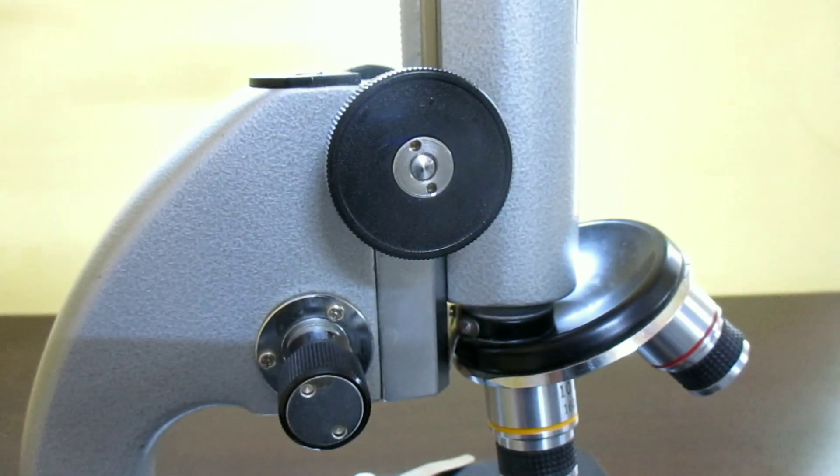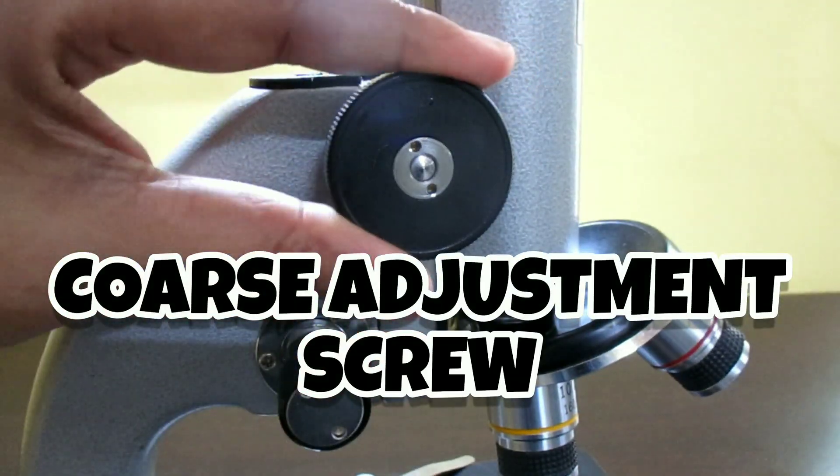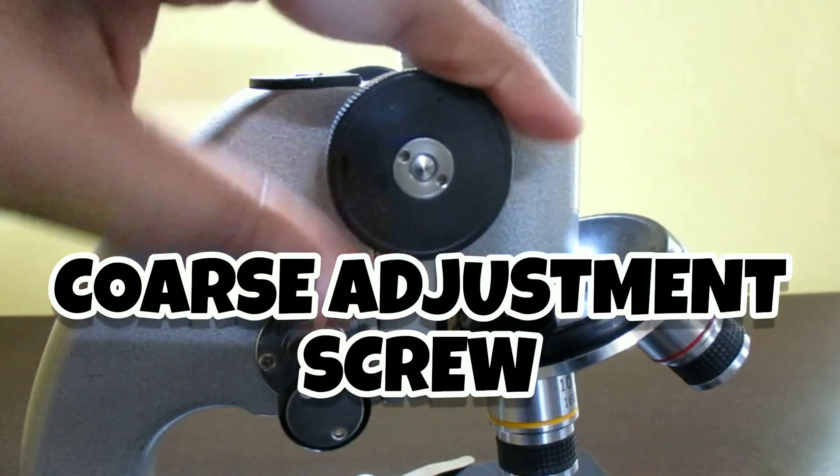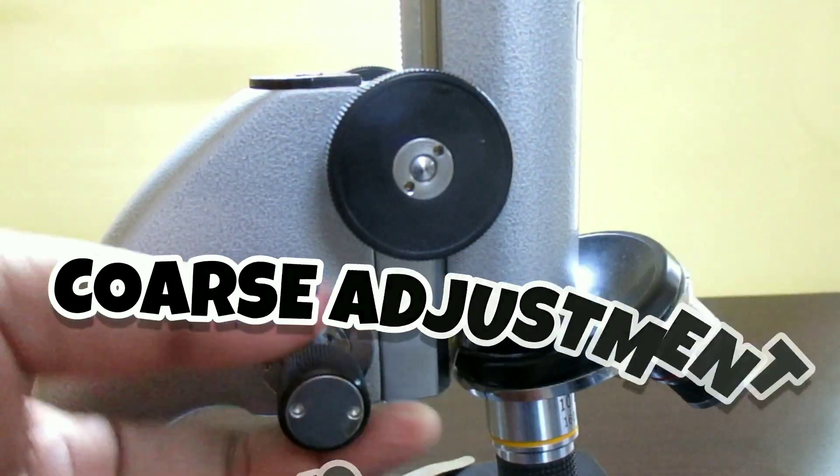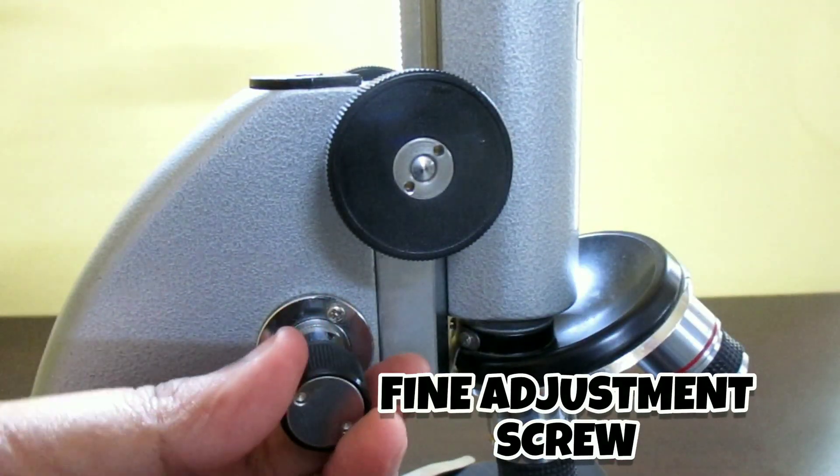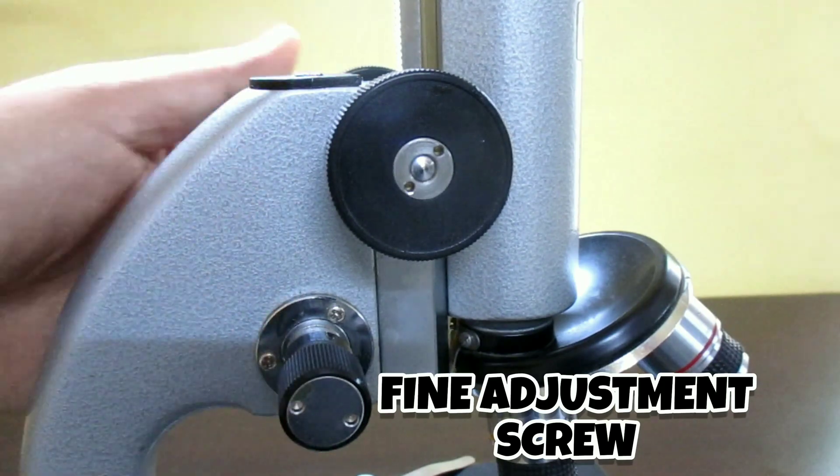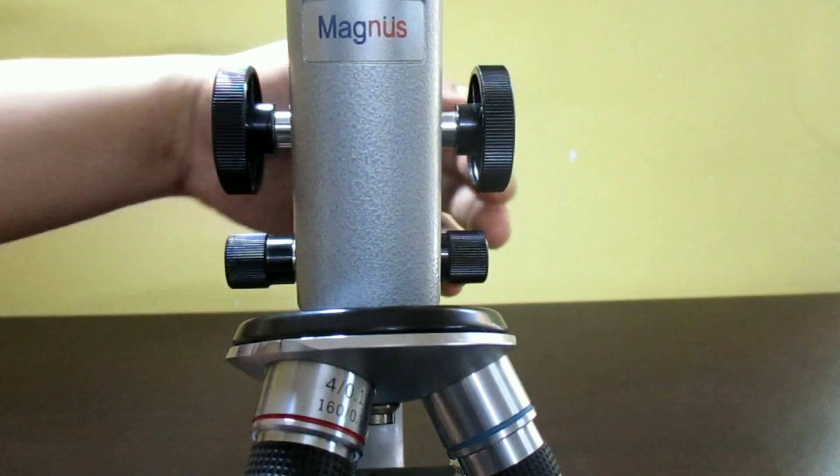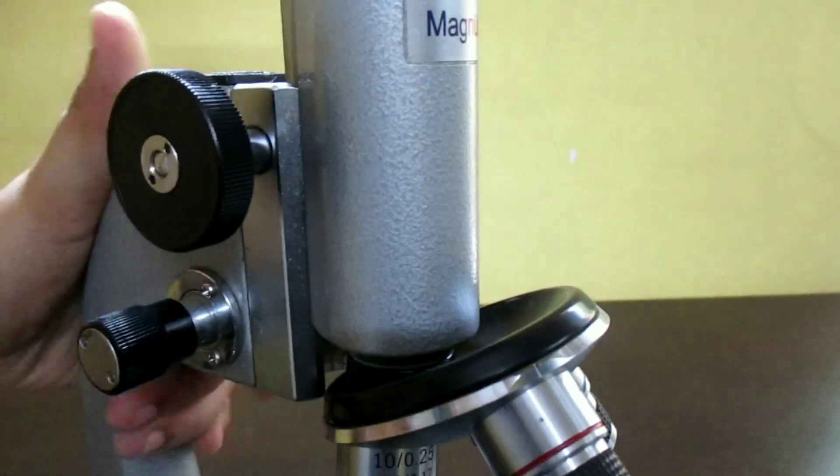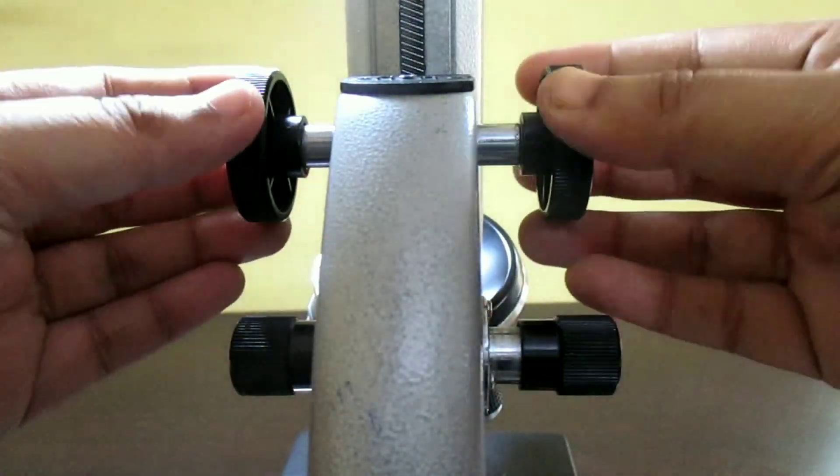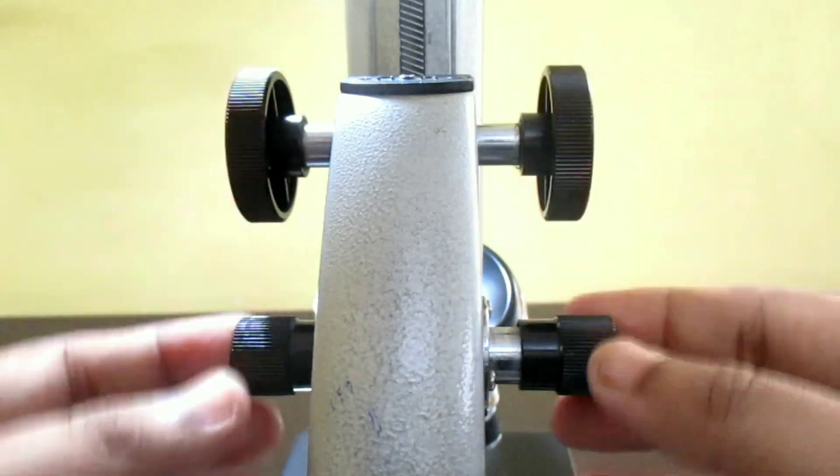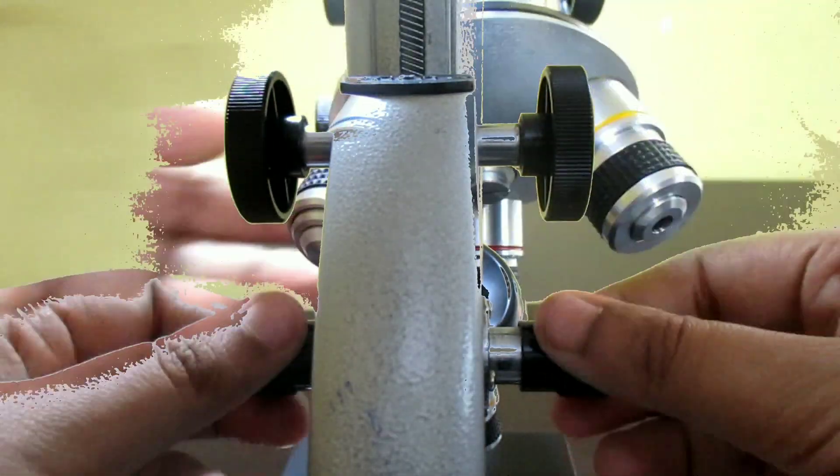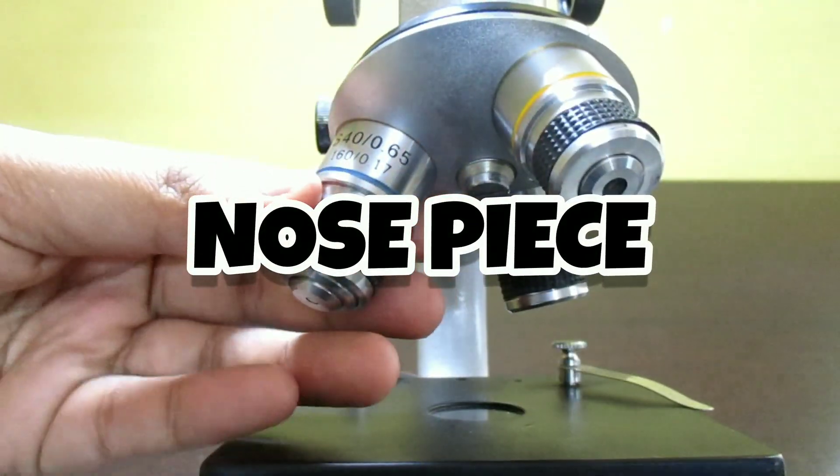These are the large screws on both side of the upper and front part of the arm. These are called coarse adjustment screws. Just below this are another pair of small screws. These are fine adjustment screws. The body tube can be quickly raised and lowered with the help of coarse adjustment screw. On the other hand, the body tube can be slowly raised or lowered with the help of fine adjustment screw.